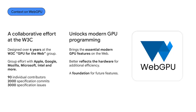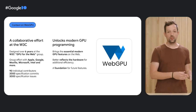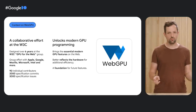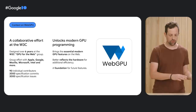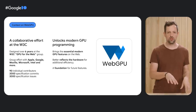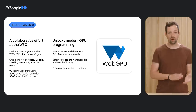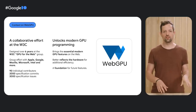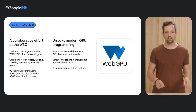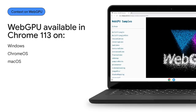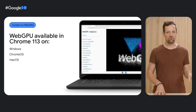WebGPU unlocks a lot of new GPU programming possibilities in the browser. It better reflects how modern GPU hardware works, and it lays a foundation on which we can build even more advanced GPU capabilities in the future. The API has been baking in the W3C GPU for the Web group since 2017, and is a collaboration between many companies such as Apple, Google, Mozilla, Microsoft, and Intel. And now, after six years of hard work, we're excited to announce that WebGPU is available today in Chrome 113 on Chrome OS, macOS, and Windows, with other platforms coming soon. A huge thank you to other Chromium contributors, and Intel in particular, who helped make this happen.